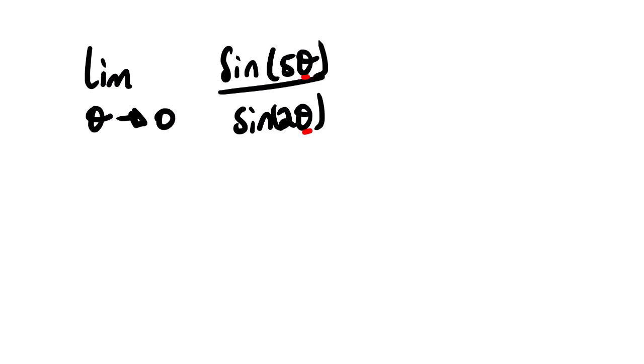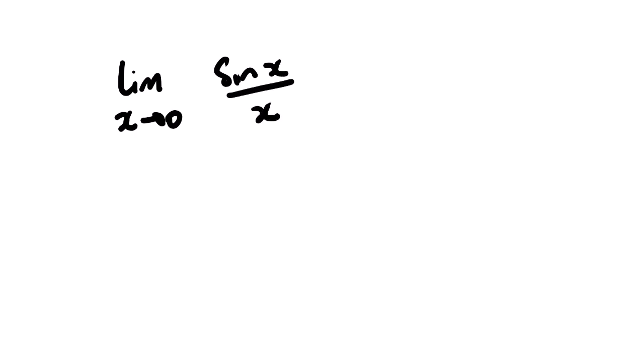In this case we need to manipulate the function before we can direct substitute. You should know — especially when dealing with trigonometric functions — that the limit as x approaches zero of sine x over x always equals one. So if we have a certain angle divided by that same angle, with x approaching zero, the result is one.